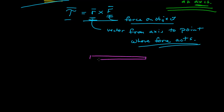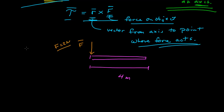Let's do a couple of examples. I have an object — a long rod, 4 meters in length — and I'm going to apply a force on one end with a magnitude of 2 Newtons. I'll show a right-handed coordinate system: plus X, plus Y, and plus Z is out of the screen. Now I want to find the torque. I have my object — that's the rod — I have my force, but I need an axis. So I'm going to calculate the torque about the other end of the rod.